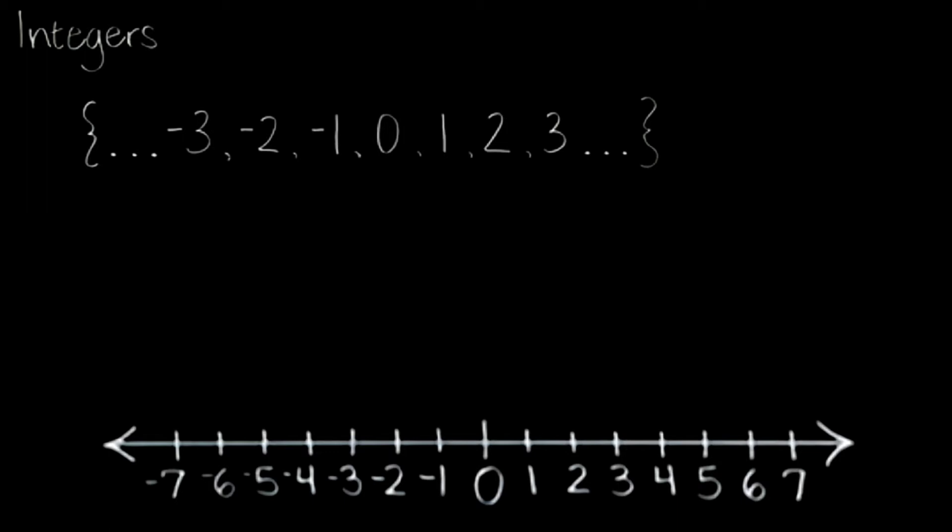So now let's take a quick look at the top of the screen. It says integers: dot dot dot negative three, negative two, negative one, zero, one, two, three, dot dot dot. So this is going to be the set of integers. And the dot dot dots just means that the set of integers also includes negative four, negative five, and on down, and four, five, and on up.